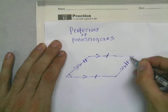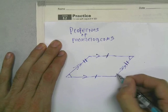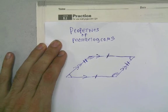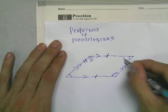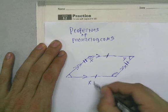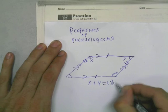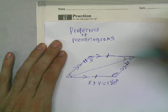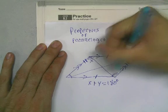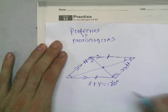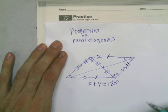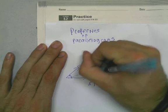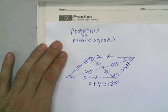Also this angle is congruent to this angle, and this opposite angle is congruent to this opposite angle. We know if this is angle x and this is angle y, we know that x plus y equals 180 degrees. The last thing that we've found out in this chapter is if we have the diagonals bisect each other at this point, then this is congruent to this, and this segment is congruent to that segment.